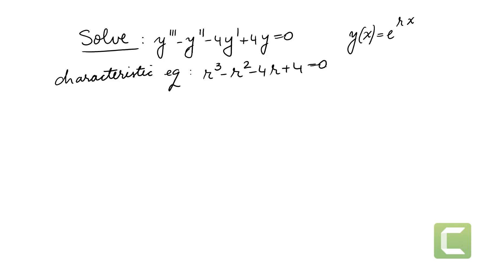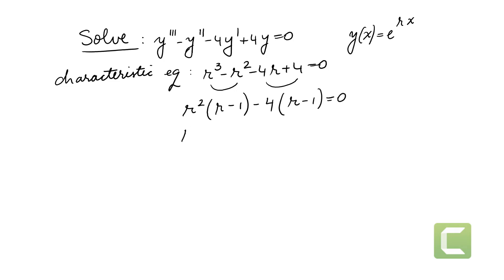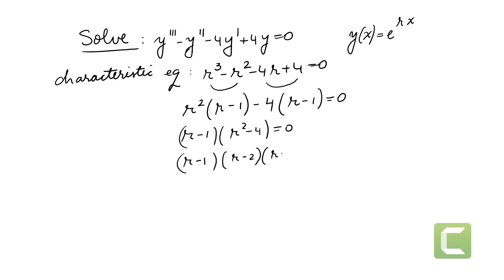We have many methods. One of them is to factor r² from the first two terms, giving r minus 1, and factor negative 4 from the last two terms, also giving r minus 1. So r minus 1 is a common factor, leaving r² minus 4 equals zero.